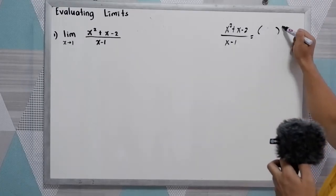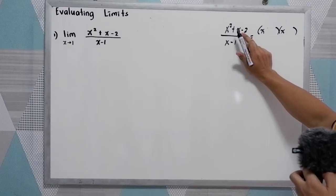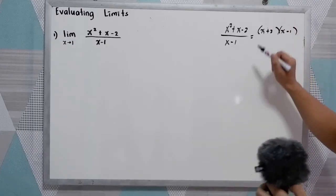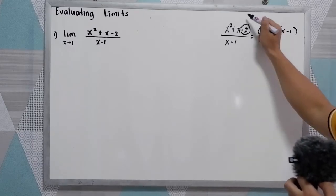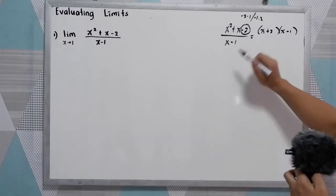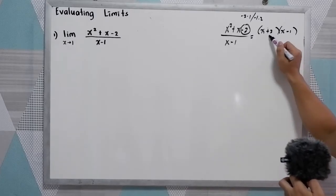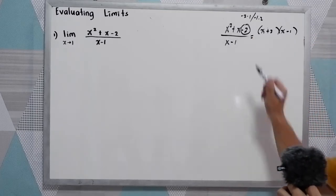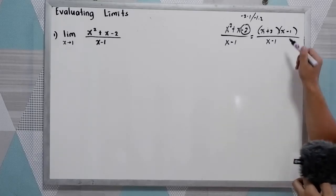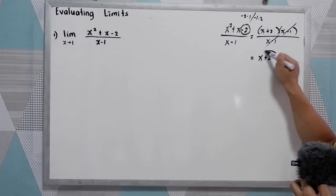Using factoring — your lesson from grade 8 — let us factor the numerator. We have x and x. This is a trinomial, so we need positive 2 and negative 1. The factors of negative 2 are negative 2 times 1, or negative 1 times 2. To check: positive 2 times negative 1 is negative 2, and positive 2 plus negative 1 is positive 1, which gives positive x. So these factors are correct, giving us (x+2)(x-1) all over x minus 1. We can cancel out x minus 1 in the numerator and denominator, leaving x plus 2.